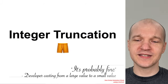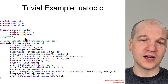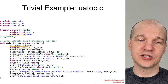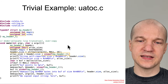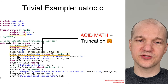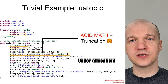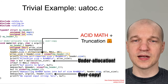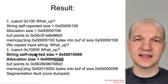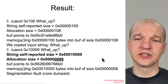Here is truncation. It's probably fine if you just take a large value and truncate it down to a smaller value, right? Here's an example where we have an unsigned int — so no signedness issues — and an unsigned short allocation size. We have an opportunity for integer overflow and truncation: a 32-bit value gets truncated down to a 16-bit value for the allocation size, leading to our classical underallocation over-copy. Passing in hex 100 is fine, but hex 10,000 will exceed the 16-bit bounds and lead to underallocation.